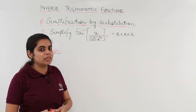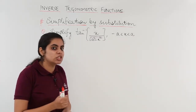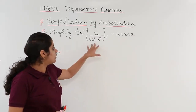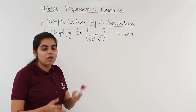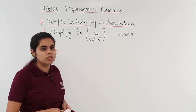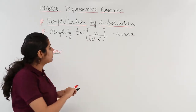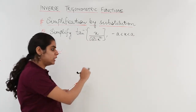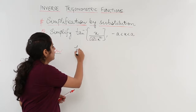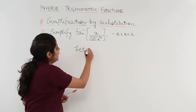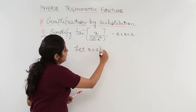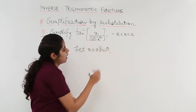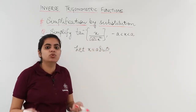We know that when the expression involves under root of (a squared minus x squared), we are supposed to substitute in a specific manner — as we learned in the table. So, we let x equal to a sin theta.